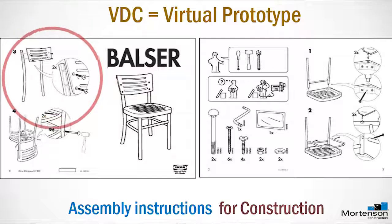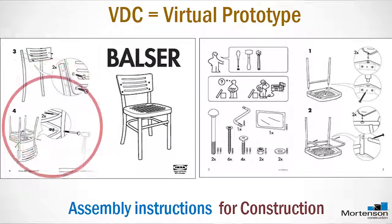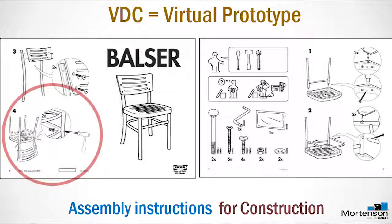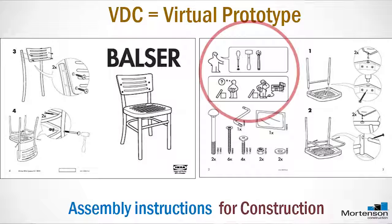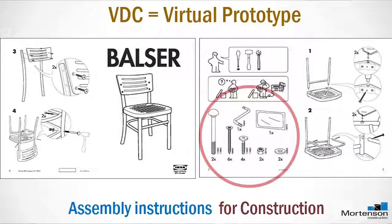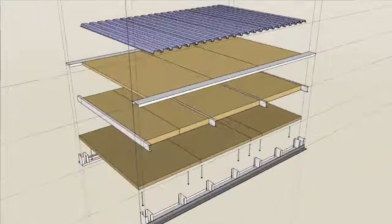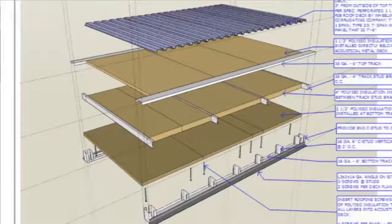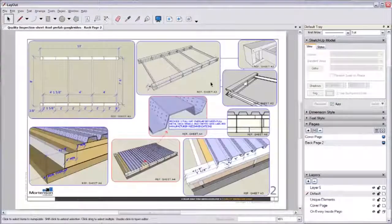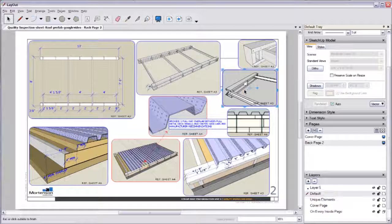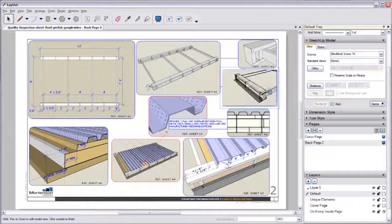We're applying the sequence of the assembly of this chair. Now also look at the tools and the parts involved in assembling this chair. These are all assembly instructions for construction. When our teams perform BDC, in essence we're creating assembly instructions for our crews to go out and build work effectively right the first day.